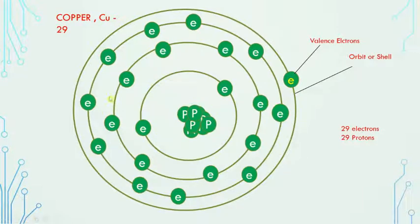You see the first shell has 2, the second shell has 8, and the third one has around 18, and the last one is having one electron, so totally 29 electrons. These electrons count is depending upon that formula 2n².